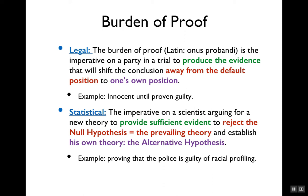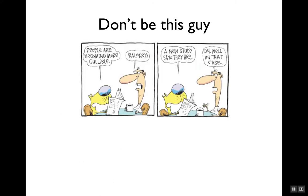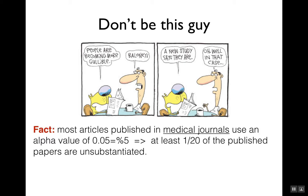An example would be proving that police are guilty of racial profiling. By default we assume the police are not guilty, and you need significant evidence to prove that racial profiling exists. Most articles published in medical journals use a confidence level of 5%, which means that at least 1 in 20 published papers are unsubstantiated or wrong.